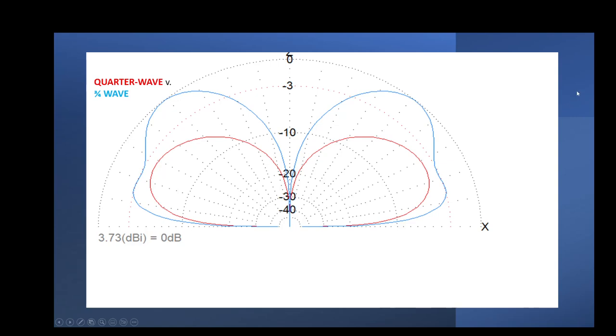So the three-quarter wave is an excellent length for an antenna. And as we'll see in a minute, it's just below the three-quarter wave where we hit the sweet spot in terms of the gain we get at those low angles.